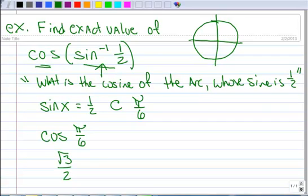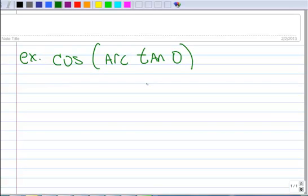New example. Cosine of arc tangent 0. Work inside first. This says, where or what arc has a tangent of 0. Well, the tangent is 0 at 0. So that part's 0. And now we want to take the cosine of 0. And the cosine of 0 is 1.